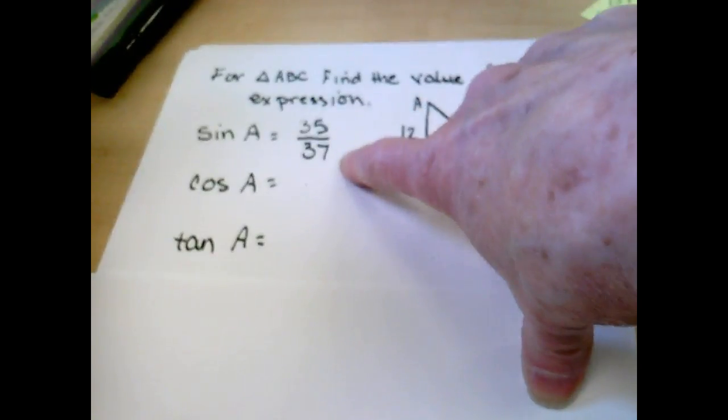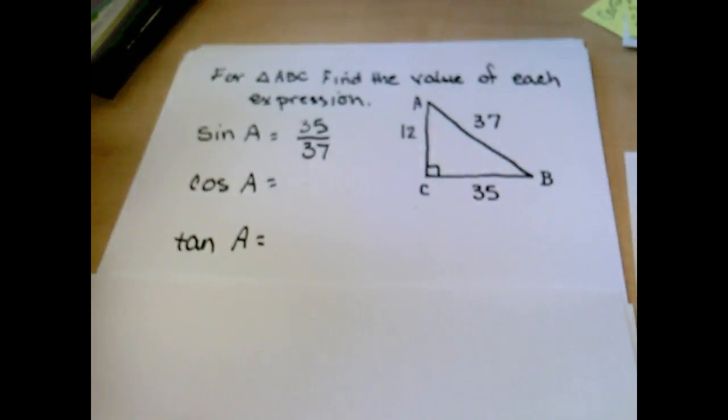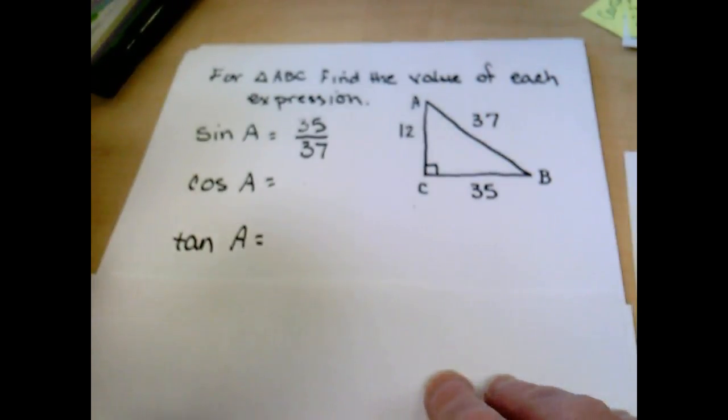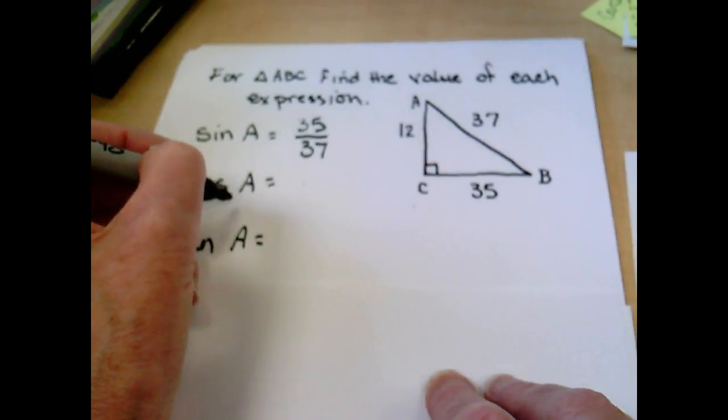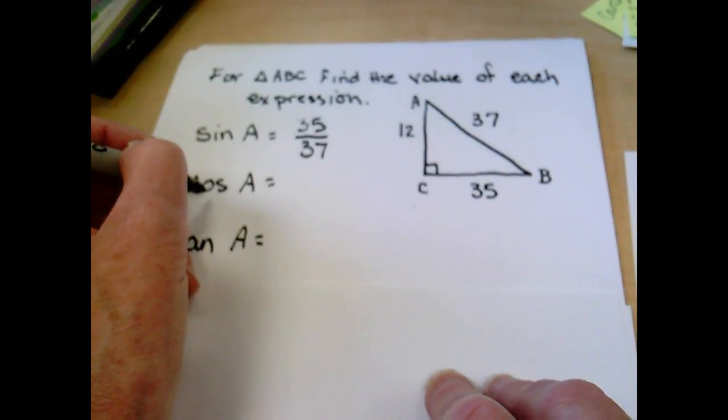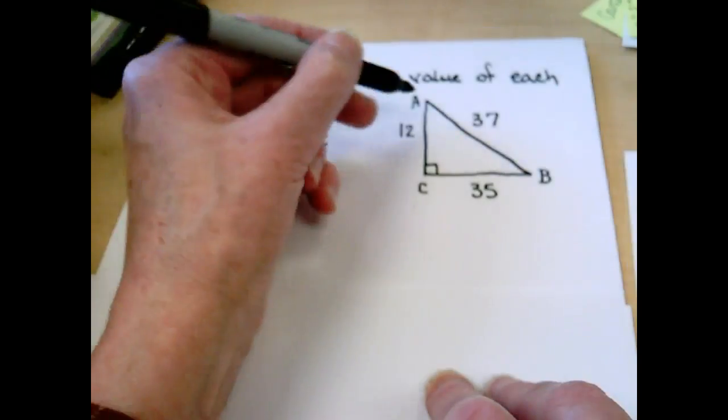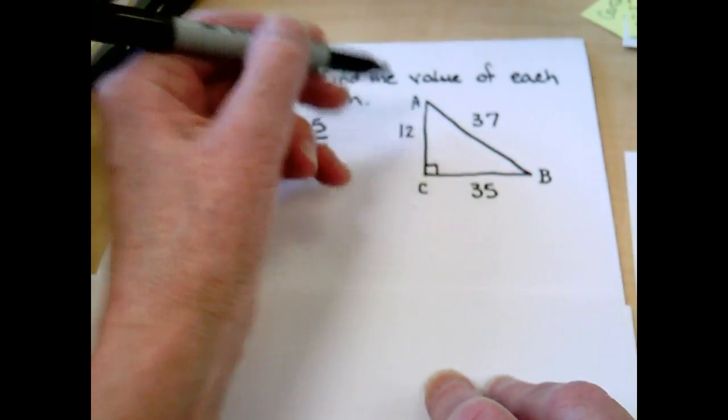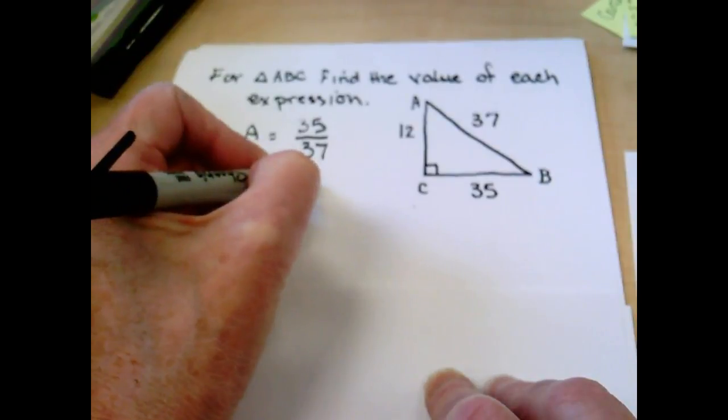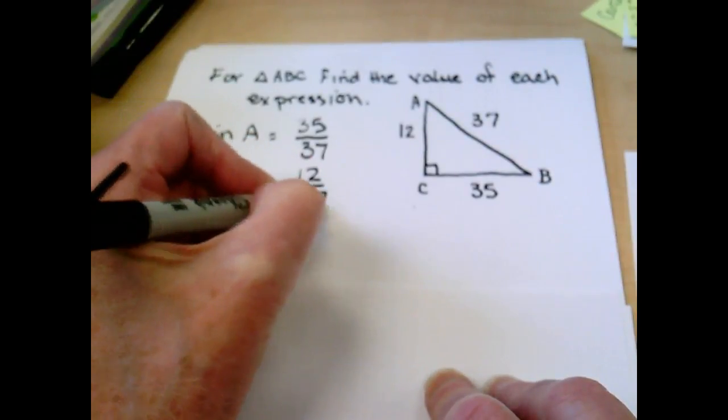And we're writing down our fraction. If your fraction can simplify, then make sure you simplify that fraction. Cosine of A. Cosine was adjacent over hypotenuse. So if we go to A, the adjacent side is 12. And the hypotenuse is 37.